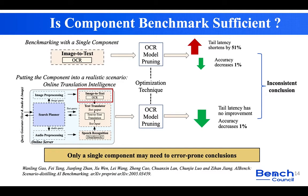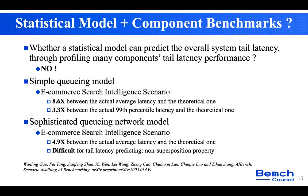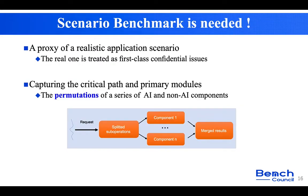Someone may argue that statistical models combining component benchmarks can predict overall system tail latency by profiling individual component latencies. Our answer is no. We conducted experiments using two state-of-the-art statistical models — a simple queuing model and a sophisticated queuing network model — and found that neither could accurately predict tail latency. There may exist a three to nine times performance gap.